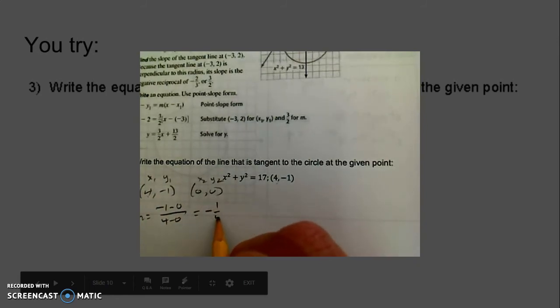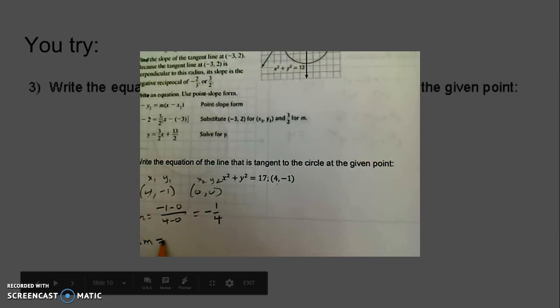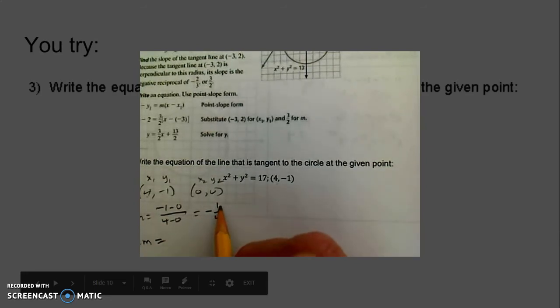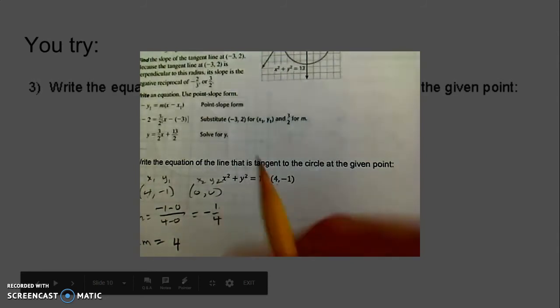My slope of that radius between the center and this point (-1, 4) is -4. My perpendicular slope is going to be the negative reciprocal. I'm going to invert this, so I have 1/4, then take its opposite. So my perpendicular slope, which is the slope of the tangent line at that point, is 1/4.